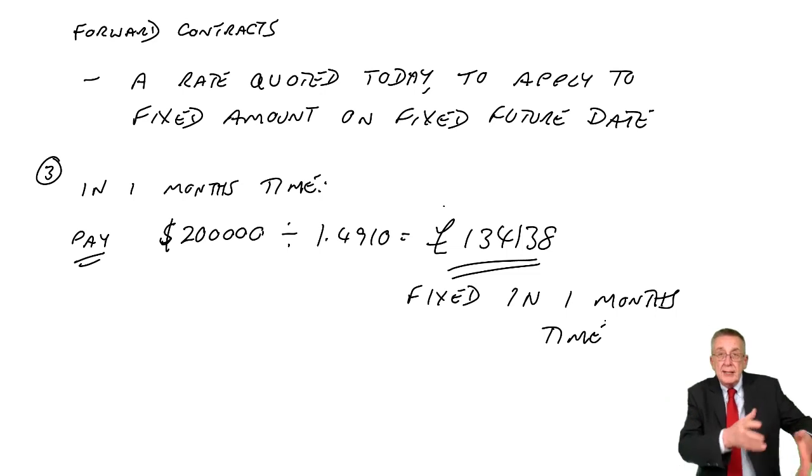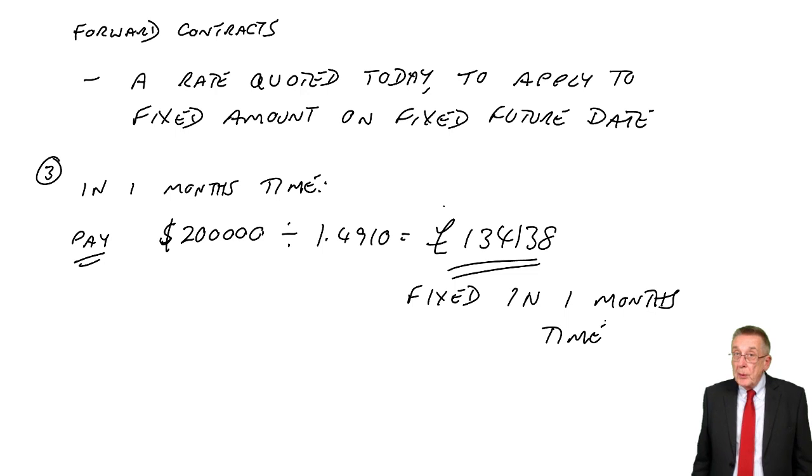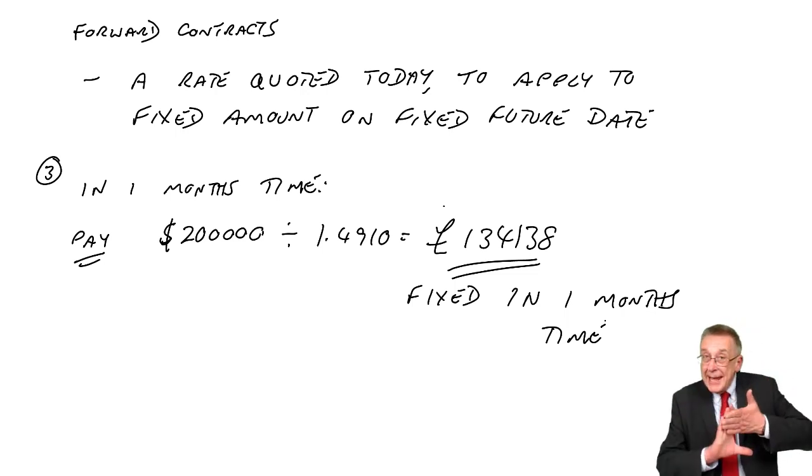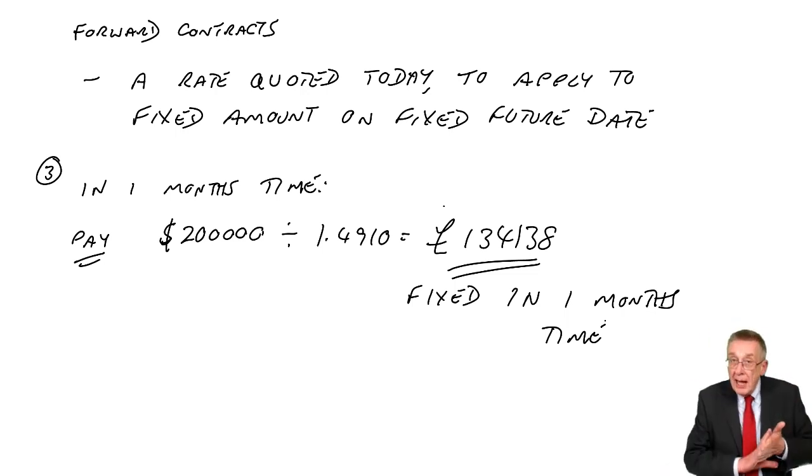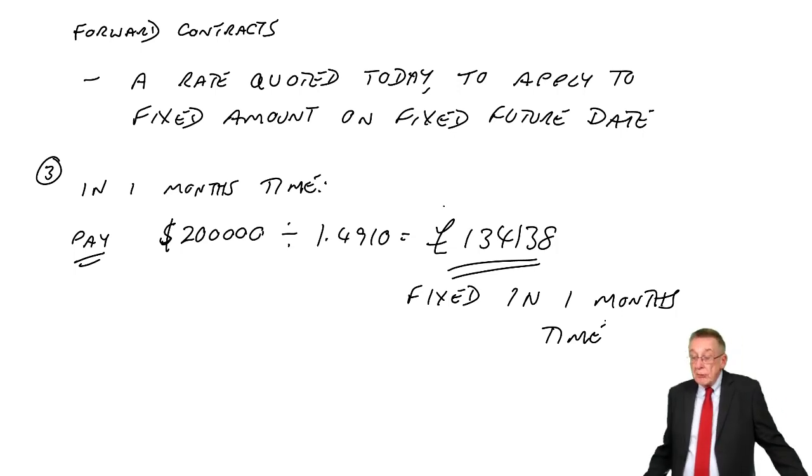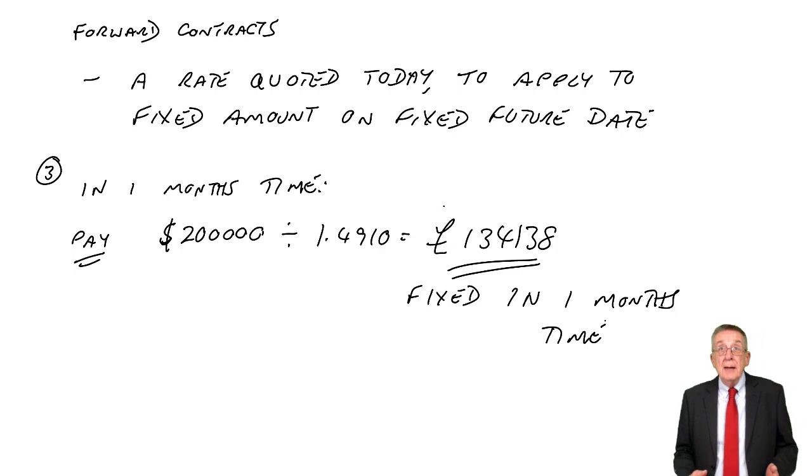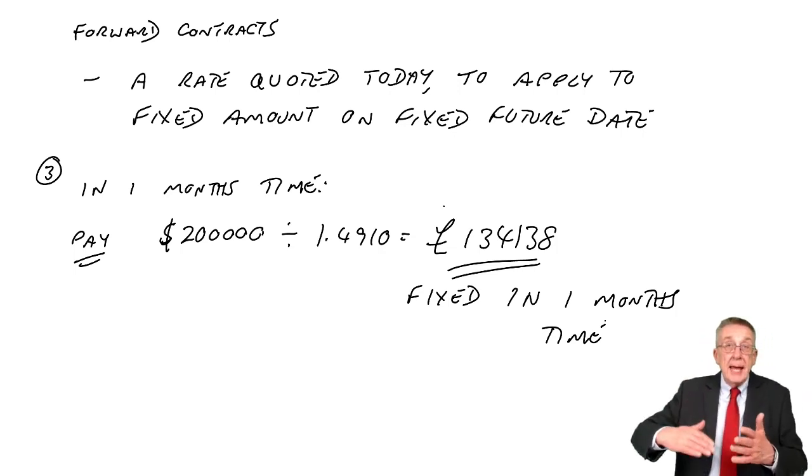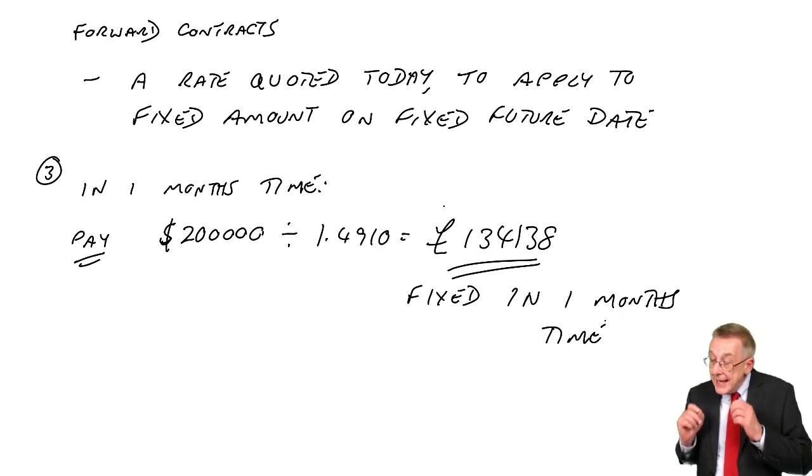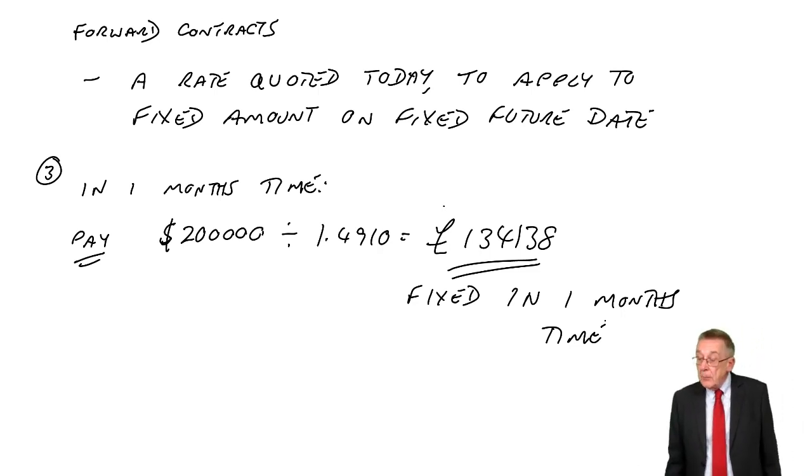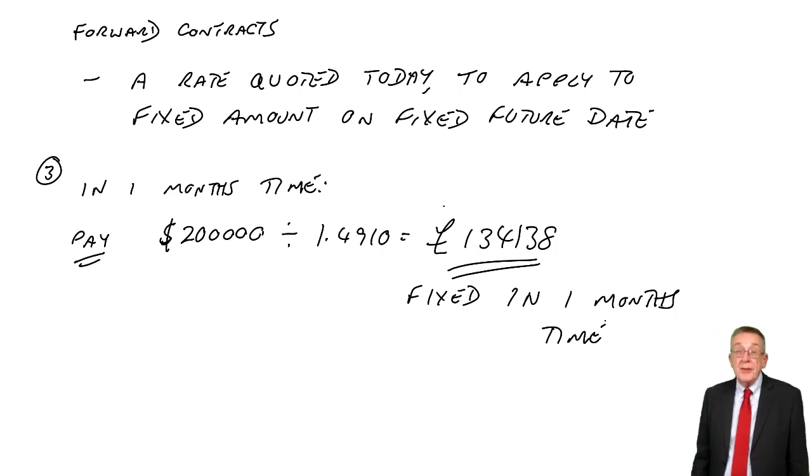So it's easy. You need to know which rate to use. We dealt with all that in the first lecture. But a forward rate, they quote the rate today to apply to a fixed amount on a fixed future date. And there's no risk at all. The actual rate in a month's time may be better, may be worse. But if we haven't done anything, it's risk. We may gain, we may lose. Here, I'm guaranteed I'll pay exactly 134,138 pounds. There is no risk, it's certain.